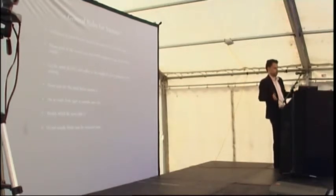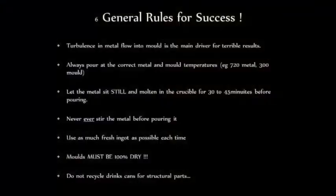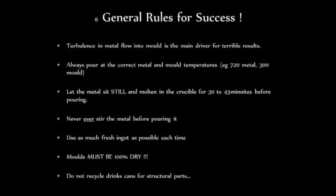General rules for success. If you do find someone with some equipment or you want to buy some and you start messing around with it. 90% of castings go wrong because the metal is turbulent when it flows into the mold and it gets oxidized. So what you're always trying to do is get it to flow in without splashing. That's basically the main reason why they screw up. So do not splash the metal. Do not stir the metal. Do not pour some of it on the floor and then kind of scoop it back in. Don't use Coke cans.